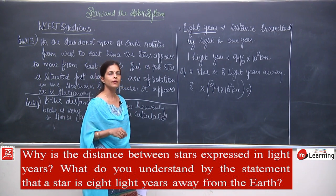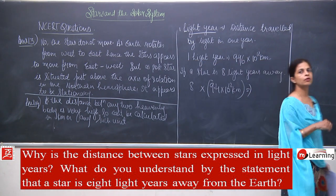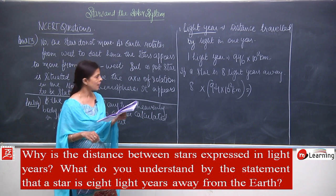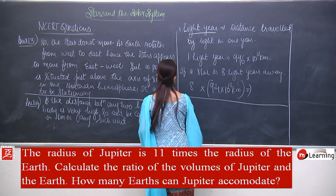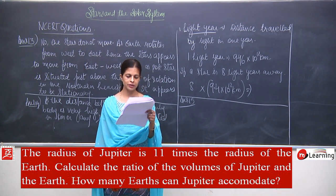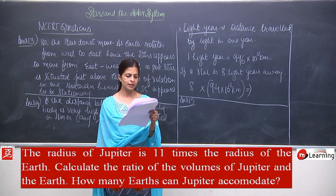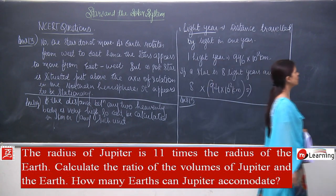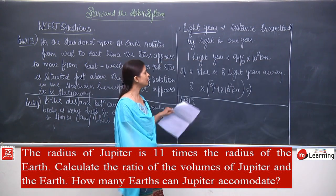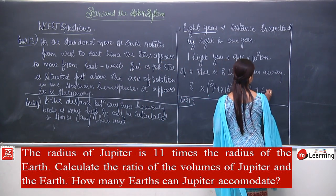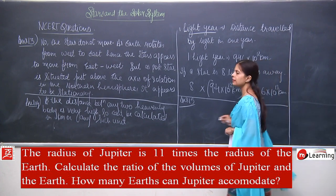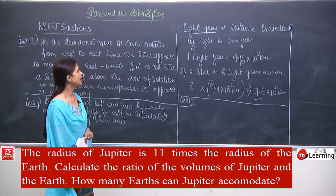If you calculate this, it will come around 7.6 × 10^12 kilometers — something like that. Please calculate this; it is correct. This was our question number 14. Now we will talk about the last two questions, that is question number 15 and question number 16.